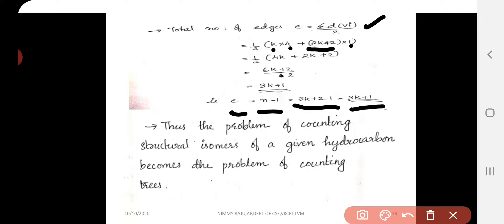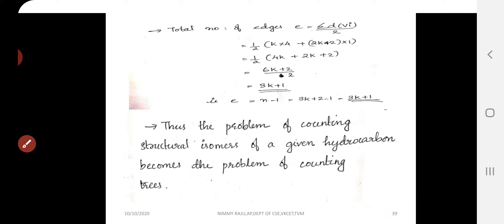The hydrocarbon molecule is thus represented as a tree using a connected graph. The problem of counting structural isomers of a given hydrocarbon becomes a problem of counting trees. This is the counting tree problem.